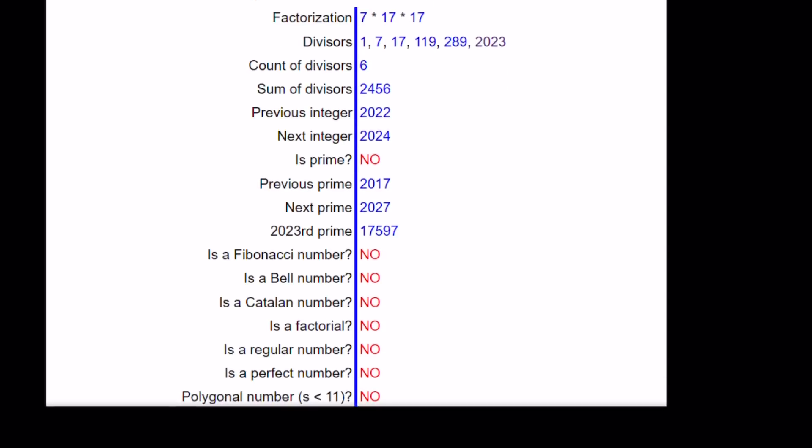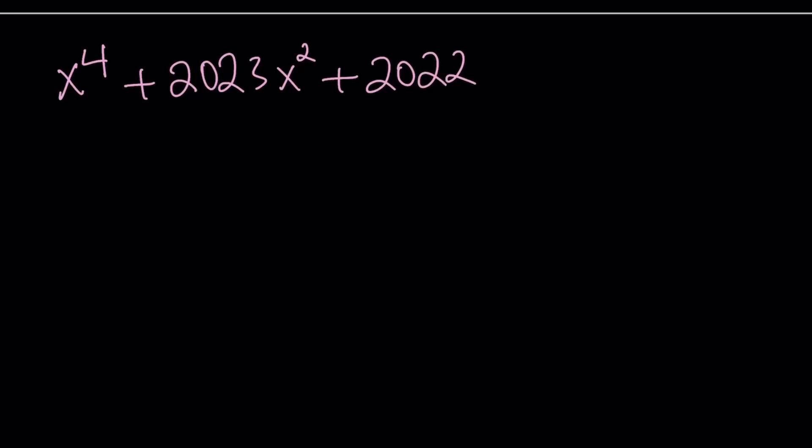Let's proceed with the solution of this problem. I'm going to rewrite the equation: x to the 4th plus 2023 x squared plus 2022 x plus 2023 equals 0. Hopefully you notice that the coefficient of x squared and the constant term are the same, and they're actually one more than the coefficient of x. So that gives us an idea how to proceed.